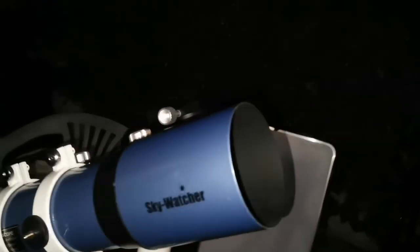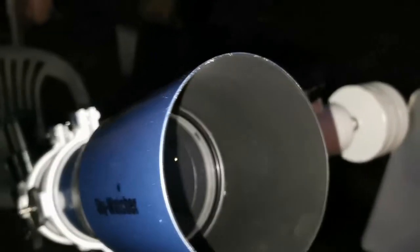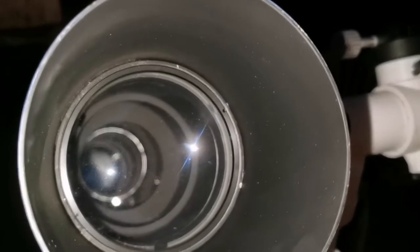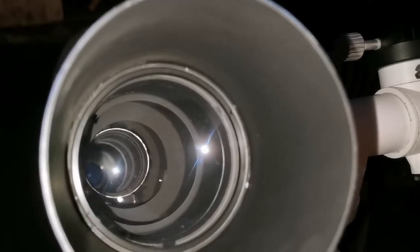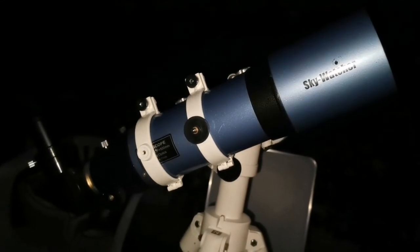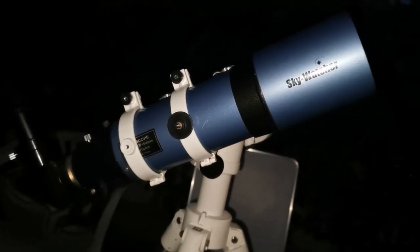This is the objective lens with the baffles inside the tube. I have mounted it on a Sky T2 altazimuth mount.